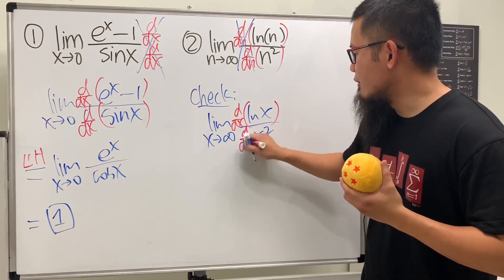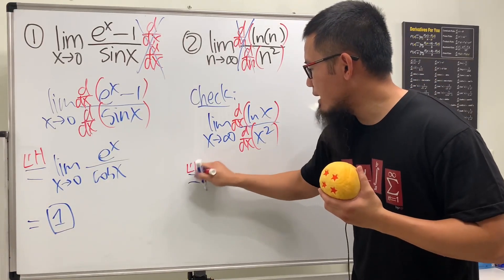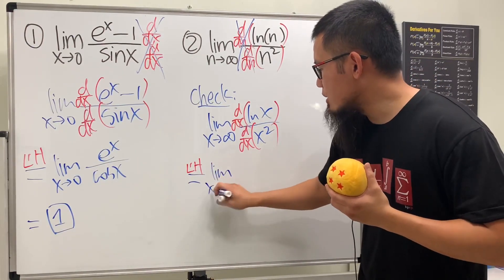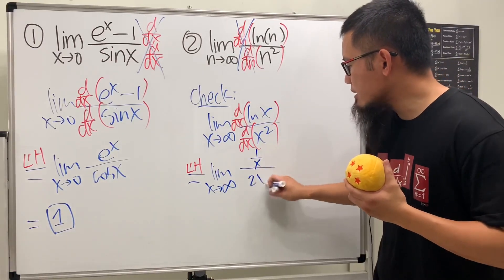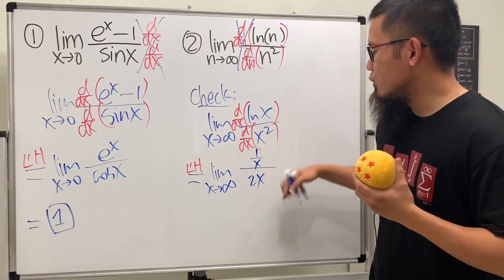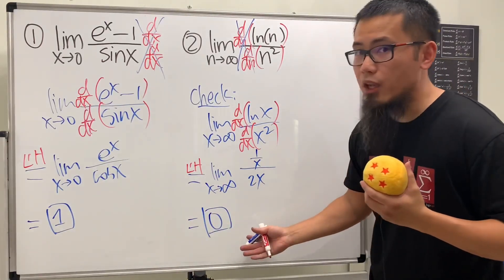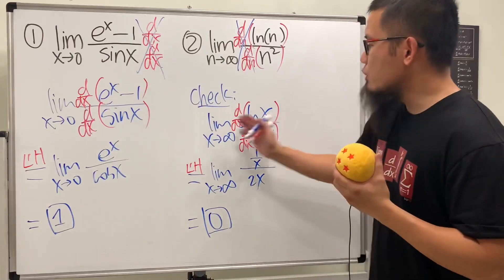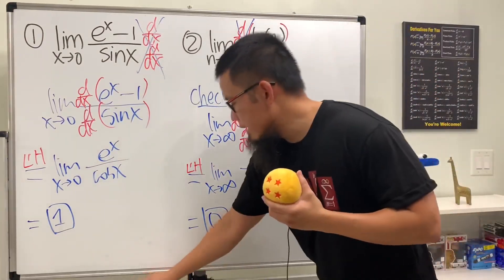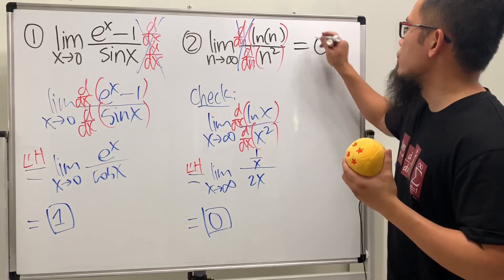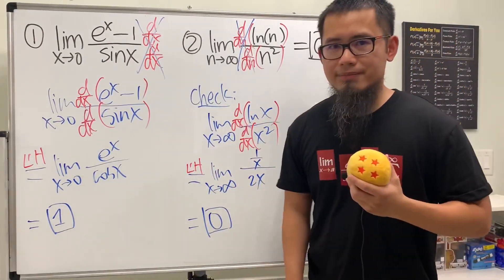For the function version, we have the limit as x goes to infinity of ln x over x squared. Put d/dx in the front for both the top and the bottom. Based on L'Hôpital's rule, on the top we get 1/x and on the bottom we get 2x. Plugging in infinity gives us zero. If the function version gives zero, then the sequence limit will also be equal to zero. Remember: d/dx goes in the front.